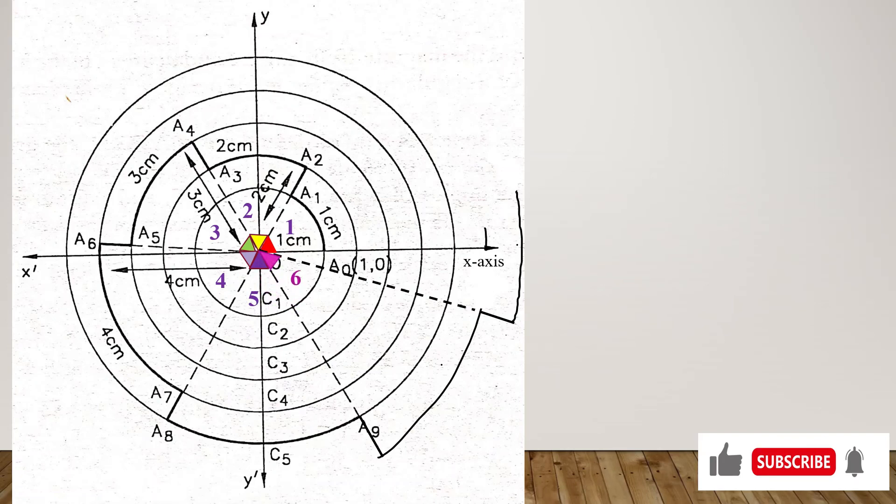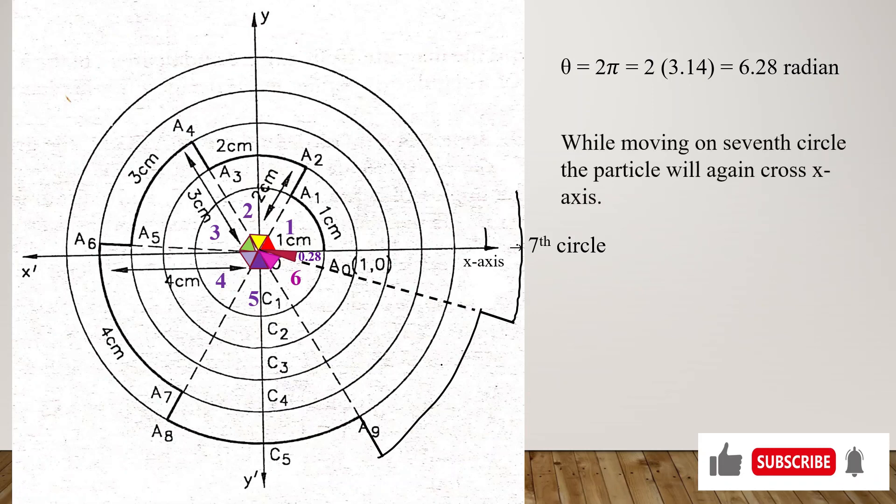Now the remaining angle before the x-axis we have 0.28 radians. So that gives us θ as 6.28 radians for the complete circle, and by this time the particle will be on the seventh circle. So while moving on the seventh circle, the particle is likely to cross the x-axis.